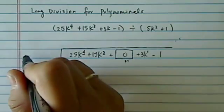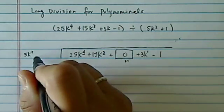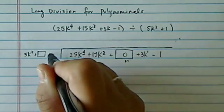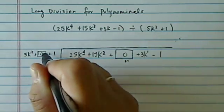Divide, same thing on this one. 5k squared, I'm missing a linear term, a plus 1. I'm going to put a 0k in there.